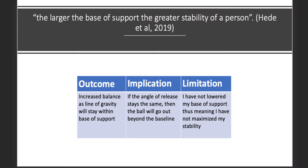A suggested way to improve my stability is to create a bigger base of support, because according to Heed, Russell, Weatherby and Williams, the larger the base of support, the greater the stability of a person. A predicted outcome is that because my base of support is greater, my line of gravity will stay within my base of support. This will allow me to use more force, enabling me to jump higher. Also, it is suggested that I increase the flexion in the hinge joint in my knee. Not only would it mean that I am engaging the larger muscles in my body, but I can also increase the amount of ground reaction force being used.